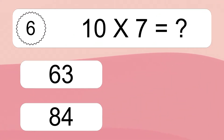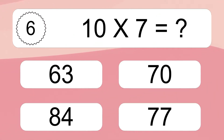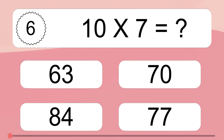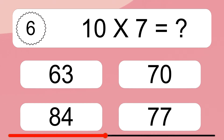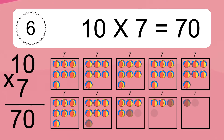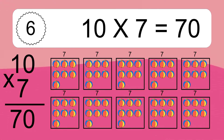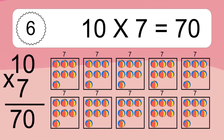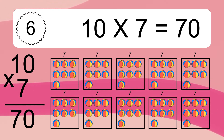10 times 7 equals what? 10 times 7 equals 70. We have 10 boxes, and each box has 7 colorful balls inside. If you count all the balls in all the boxes together, you will have 10 times 7 balls. This equals 70 balls.